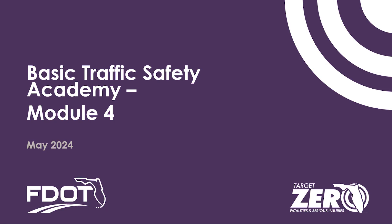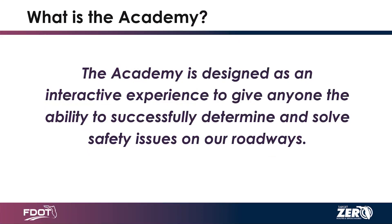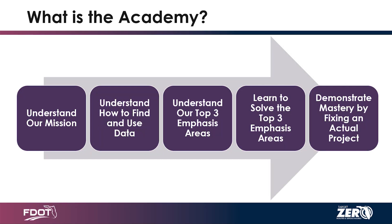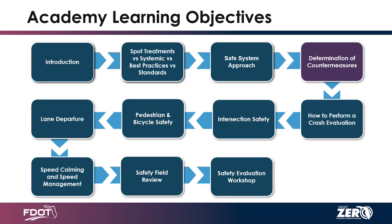This is the fourth module of the Traffic Safety Academy. As Ryan says, we're working towards being able to identify and solve problems on the roadway. We are right now in the 'understand how to find and use the data' portion. Module five will be on crash data, and starting with module six, we'll get into the actual emphasis areas. Thursday we'll be getting into intersection safety.